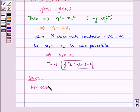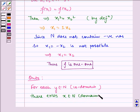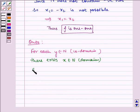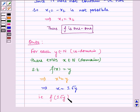For each y belongs to N in co-domain, there exists x belongs to N of domain such that f(x) = y, which implies x² = y, which implies x = ±√y. That is, f(±√y) = (±√y)² = y.